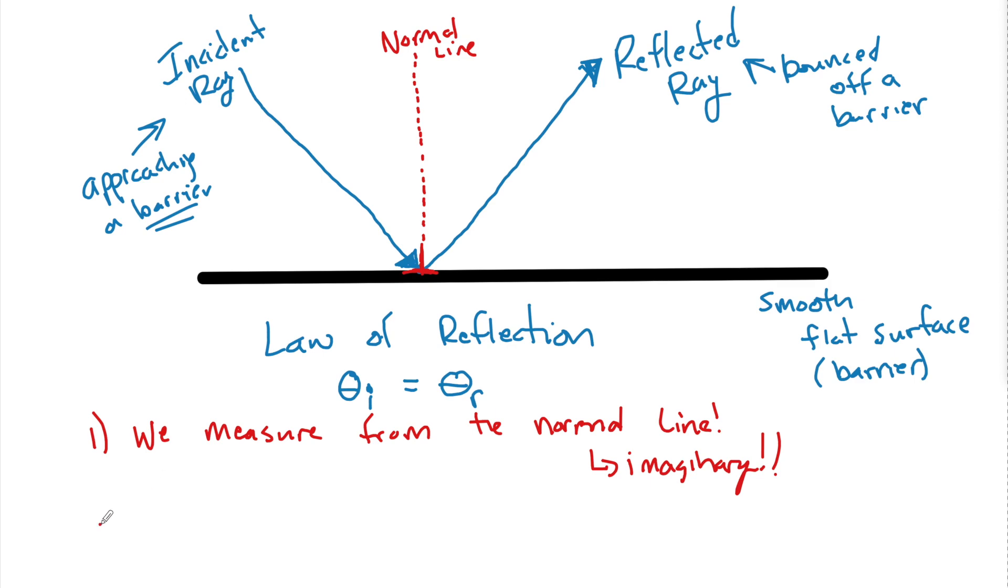The second very important thing is incident angles. This is going to be the angle of the approaching ray. This has to be measured from the normal, not the surface. So guys, this is the angle of incidence. We never measure over here. Under no circumstances can you measure angles from the surface.